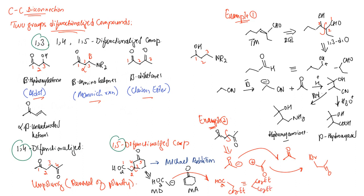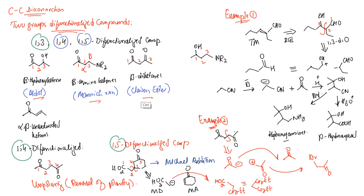To summarize the basics: there are three types of difunctionalized organic compounds — 1,3, 1,4, and 1,5. For 1,3 difunctionalized compounds, they can be made through aldol condensation giving beta-hydroxy ketone, through a Mannich reaction giving beta-amino ketone, and through Claisen ester condensation for 1,3 diketones.